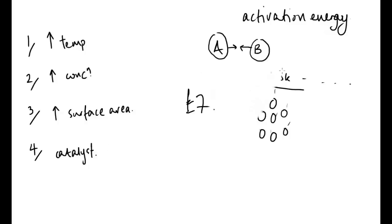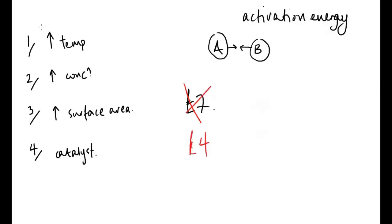Finally, the catalyst. In the cinema analogy, a catalyst works by reducing the price of a ticket. Whereas a ticket was £7 before, it's now £4. So a person who previously had £6 and got turned away — their collision was unsuccessful — now has the required amount, the required energy, and they get into the cinema. And there you have it: a video that hopefully explains rates of reaction and how to change them, as per the AQA certificate in chemistry and IGCSE course.